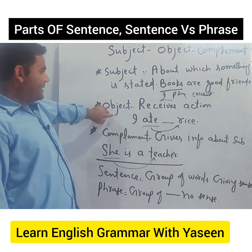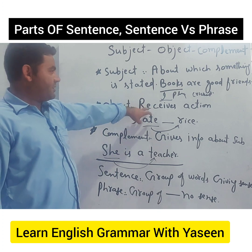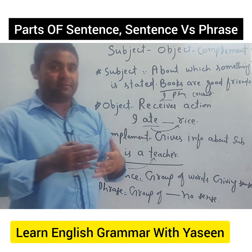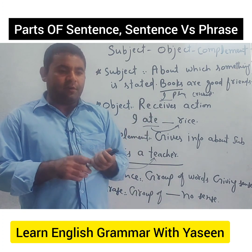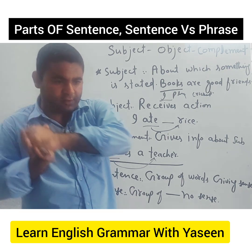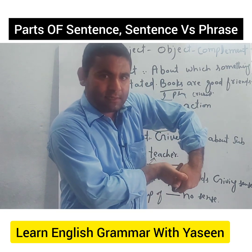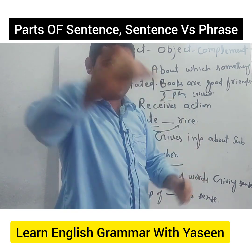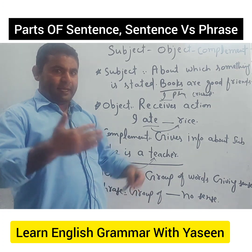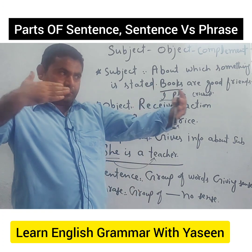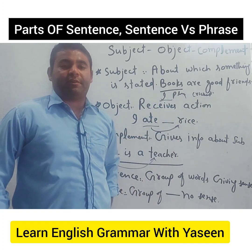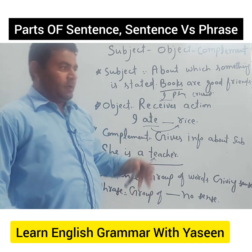We talked about object — that object is the receiver of the action; it receives the action. For example, 'I play' — I play what? I play cricket. So, cricket answers the verb; it is the receiver of the action.